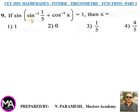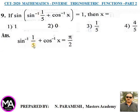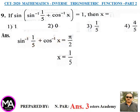Question 9: If sin(sin⁻¹(1/5) + cos⁻¹x) = 1, find x. Answer: sin⁻¹(1/5) + cos⁻¹x = sin⁻¹1 = π/2. Since sin⁻¹x + cos⁻¹x = π/2, therefore x = 1/5. Option 3 is correct.